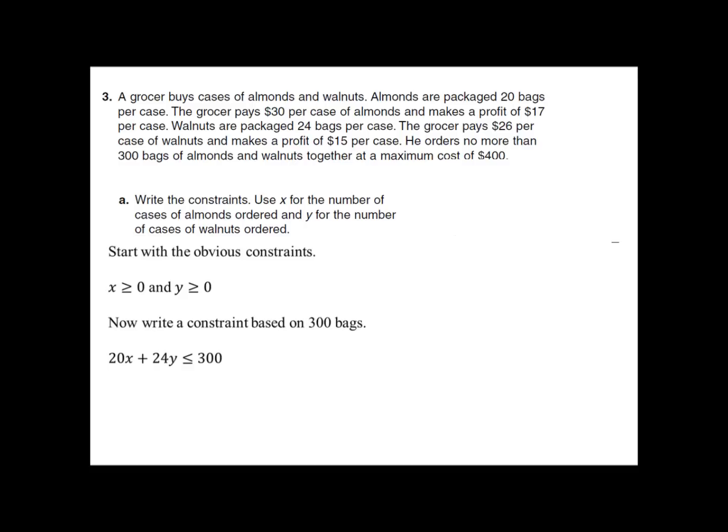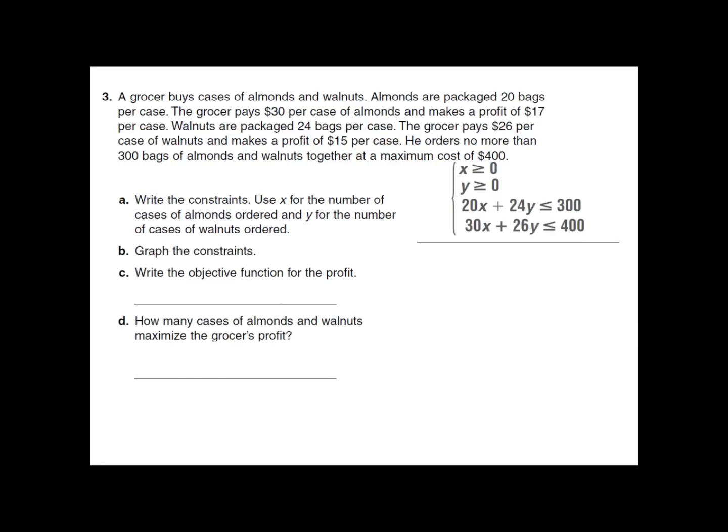Now let's write a constraint based on the 300 bags. There are 20 bags per case for almonds and 24 bags per case for walnuts. So 20X plus 24Y has to be less than or equal to 300. Our cost is the other constraint — almonds cost $30 per case, so 30X, plus $26 per case for walnuts, so 26Y, has to be less than or equal to 400. So here we have our four constraint equations.